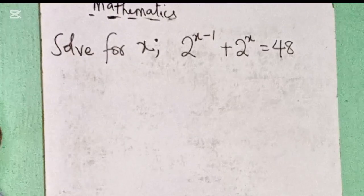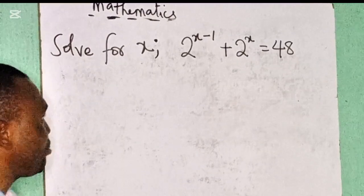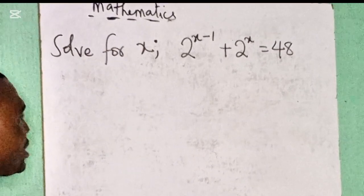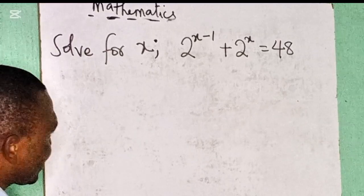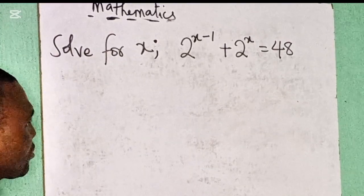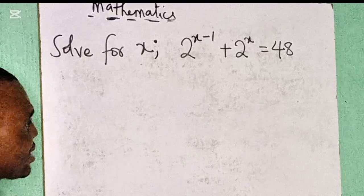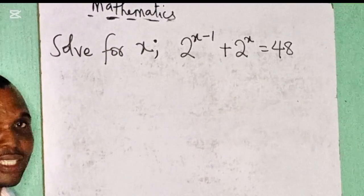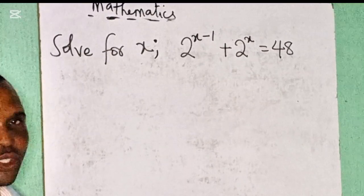Hi, welcome to Peter's online tutor. Today we shall be looking at mathematics. We have a question on the board. It reads: solve for x. 2 raised to the power of x minus 1, plus 2 raised to the power of x, equals 48. We are asked to solve for x. How do we solve this question?